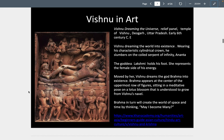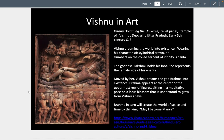Here we are looking at a high-relief sculpture panel made in the 6th century BC depicting the god Vishnu dreaming our world into existence. Wearing his cylindrical crown, he is sleeping on the coiled serpent of infinity. The female side of his energy, Lakshmi, is holding and rubbing his foot. Moved by her, he dreams the god Brahma into existence. Brahma sits in a meditative pose on a lotus blossom understood to grow from Vishnu's navel, and in turn creates the world of space by thinking 'may I become many.'